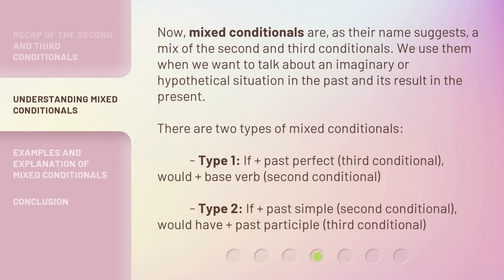Now, mixed conditionals are, as their name suggests, a mix of the second and third conditionals. We use them when we want to talk about an imaginary or hypothetical situation in the past and its result in the present. There are two types of mixed conditionals. Type 1: if plus past perfect (third conditional), would plus base verb (second conditional). Type 2: if plus past simple (second conditional), would have plus past participle (third conditional).